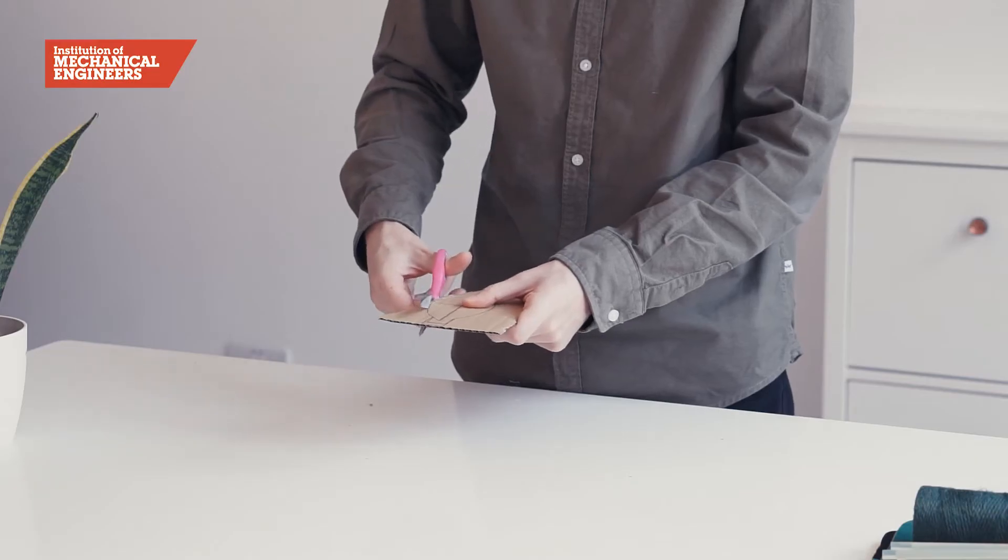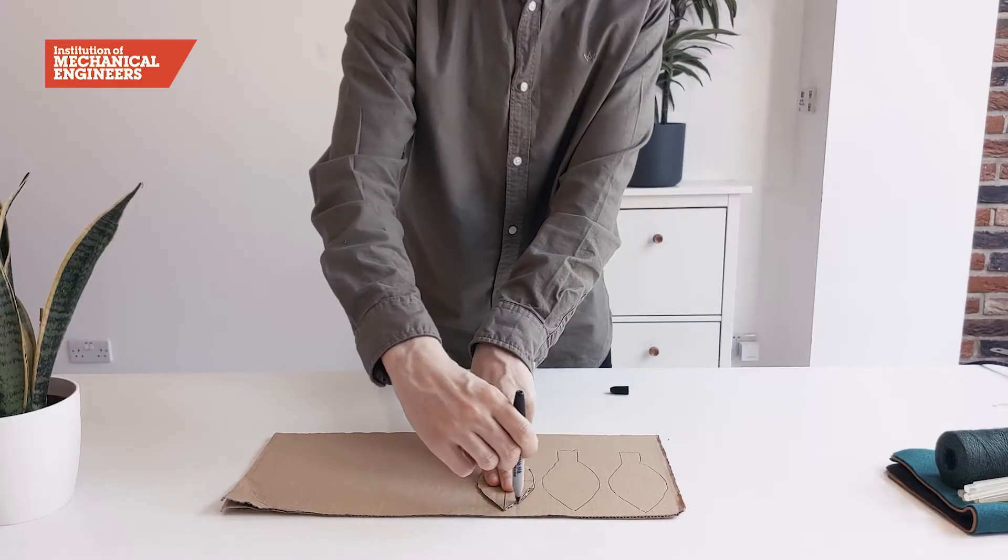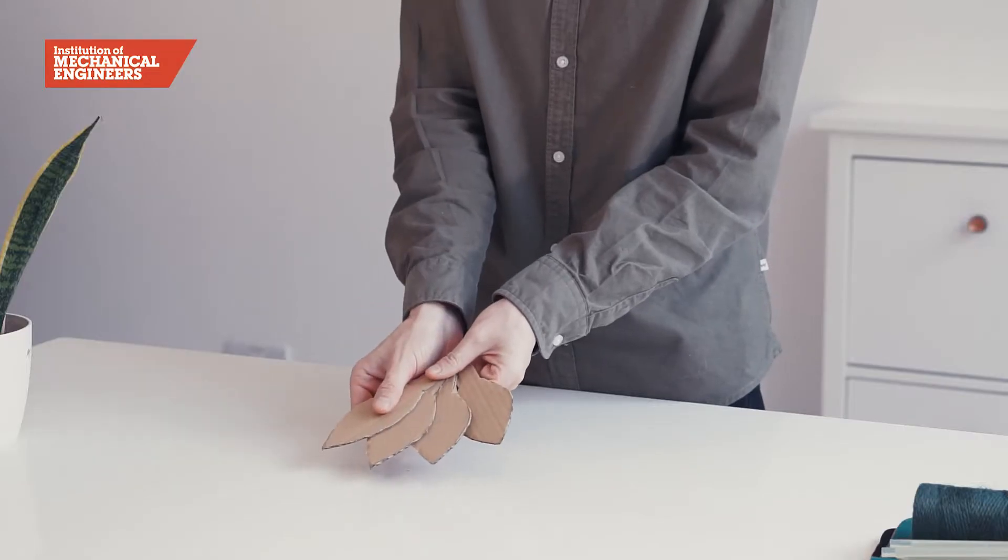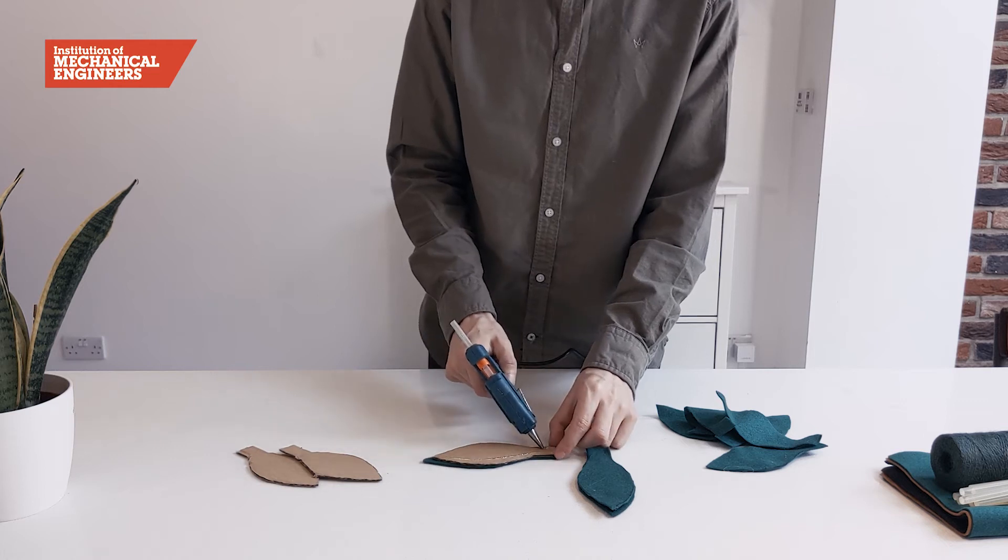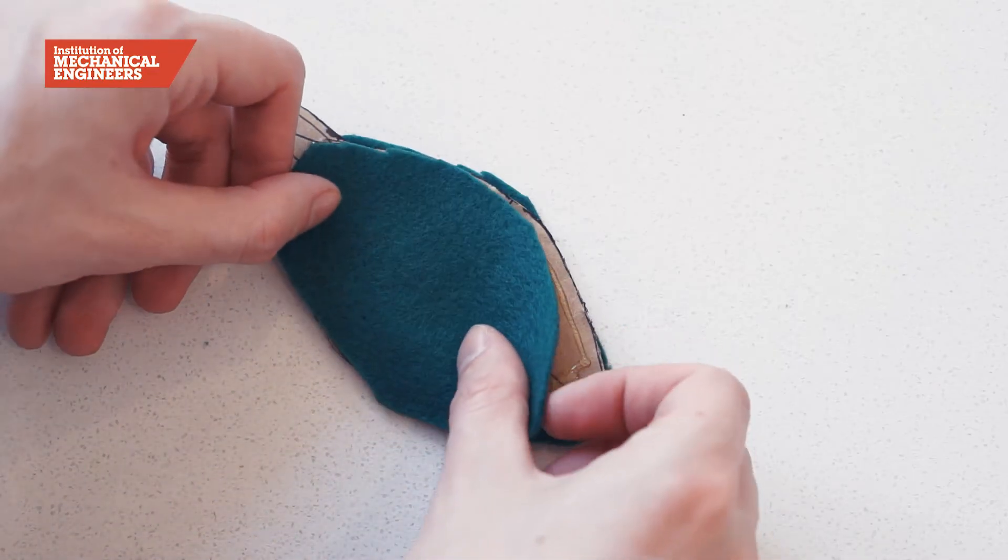We can now cut out this petal and use it as a template to make three more. To finish the petals, we will cover them in brightly coloured felt to attract pollinators.